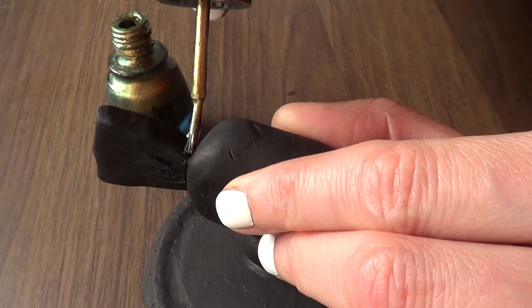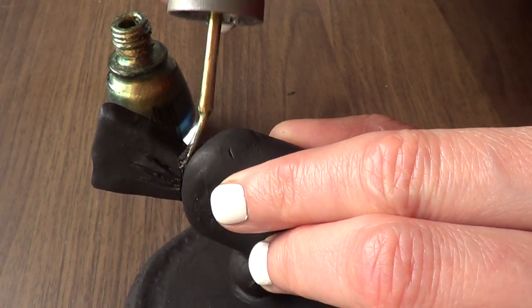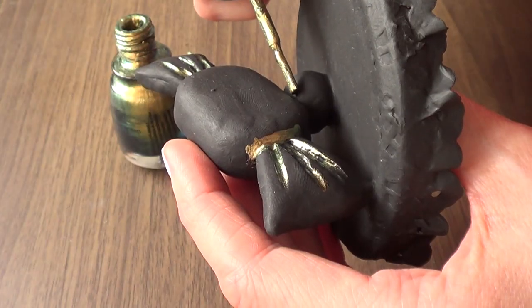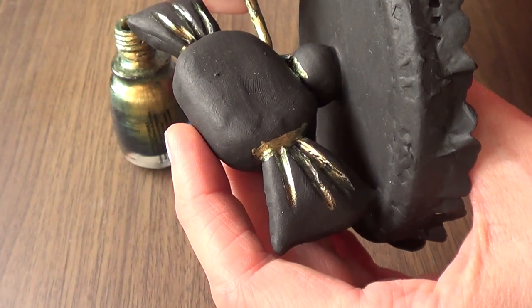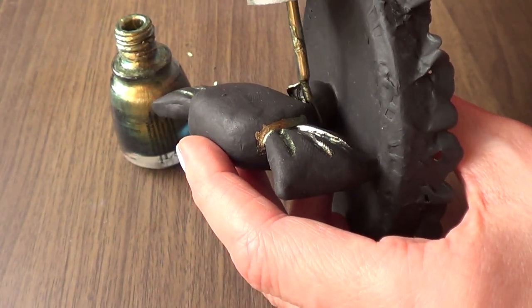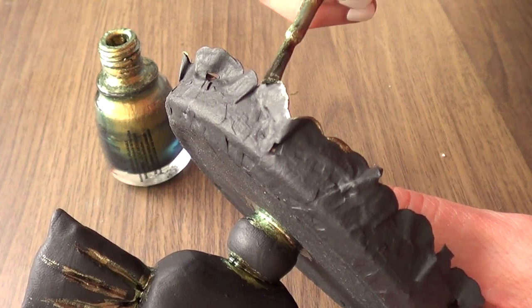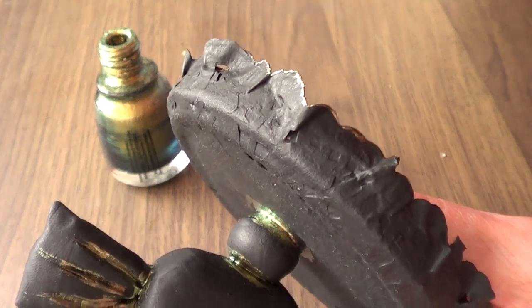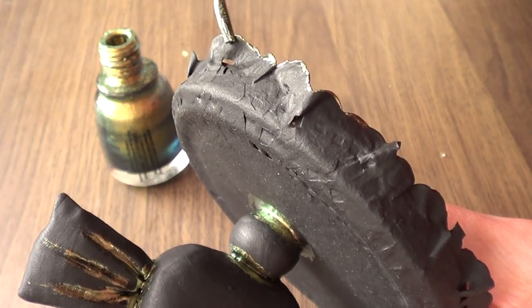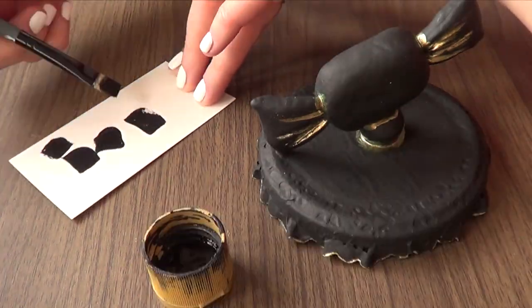The only thing about working with nail polish when it's not on your nails is that it has a smell—it's like nail polish after all—but feel free to use acrylic paint. I'm just going to add some details here and there on the candy part, going back and forth with my gold and my black. And the same thing with my doily—I just added a bit of paint on the edges.